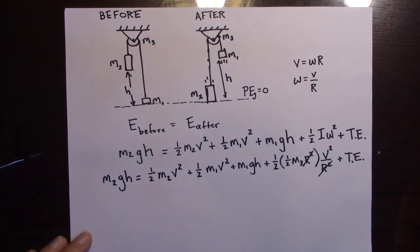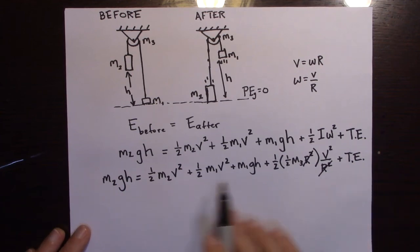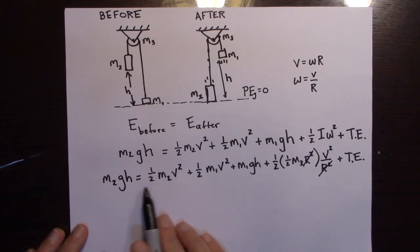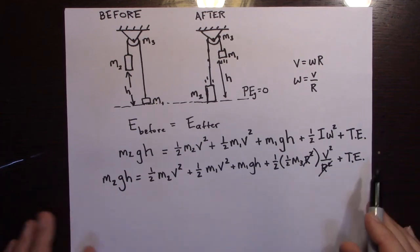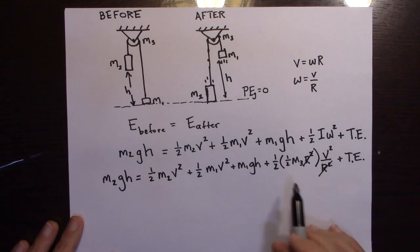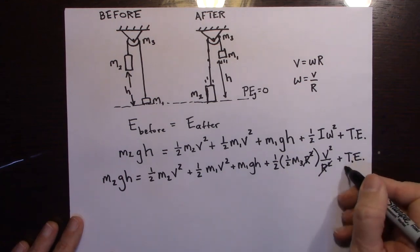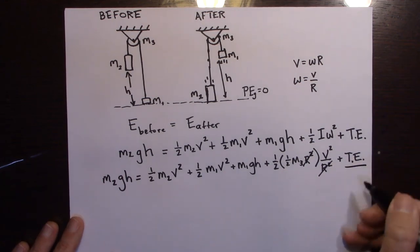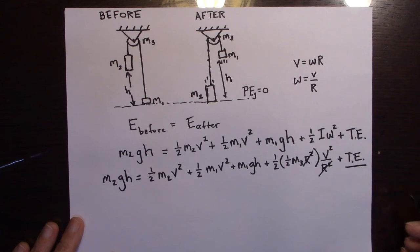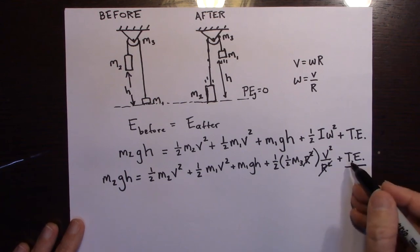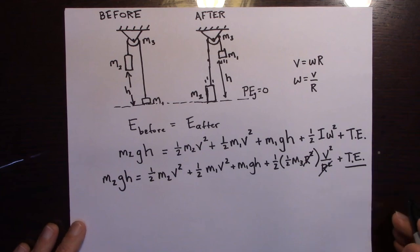At this point everything in the equation is a known value except for the thermal energy. So we can go ahead and fill in all the numbers and solve directly for the thermal energy. Thanks.